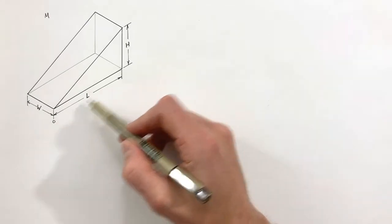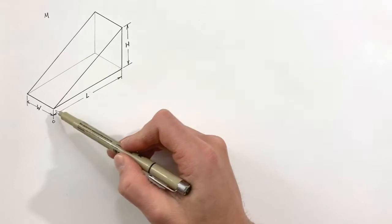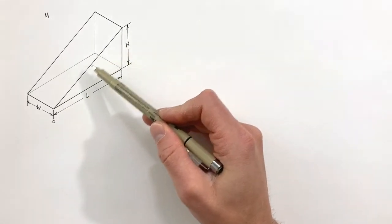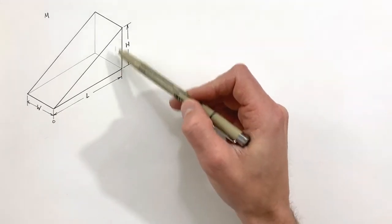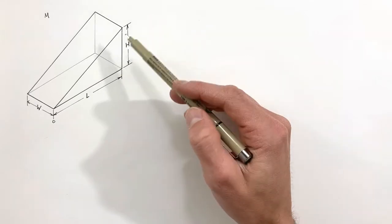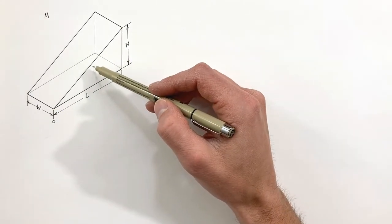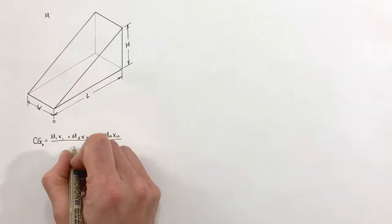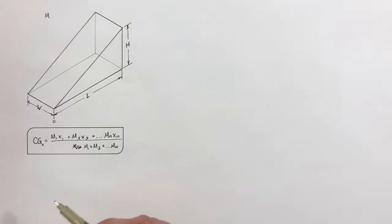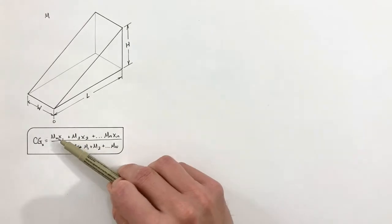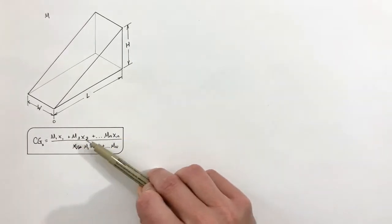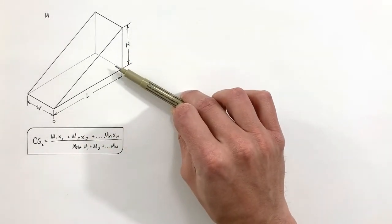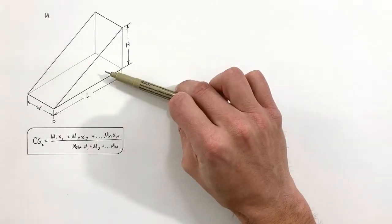To find the center of gravity of this wedge, we need to be a little clever because this wedge is a distribution of mass — not just one particle at one point. It's an uneven distribution: down at the thin end there's only a little bit of mass, but over at the thick end there's a lot. So we have to be clever in how we apply the center of gravity equation.